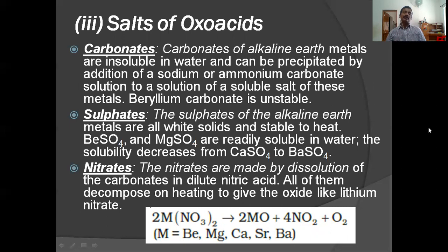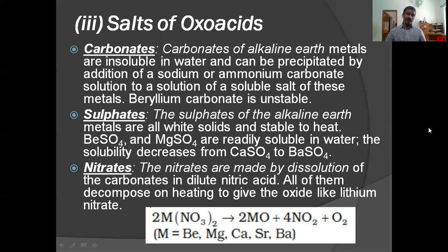Sulfates of alkaline earth metals are all white solids and stable to heat. Beryllium sulfate and magnesium sulfate are readily soluble in water. The solubility decreases from calcium sulfate to barium sulfate; only beryllium sulfate and magnesium sulfate are fully soluble in water, while other sulfates are not soluble. Nitrates: all the nitrates are soluble and are made by dissolution of the carbonates in dilute nitric acid.